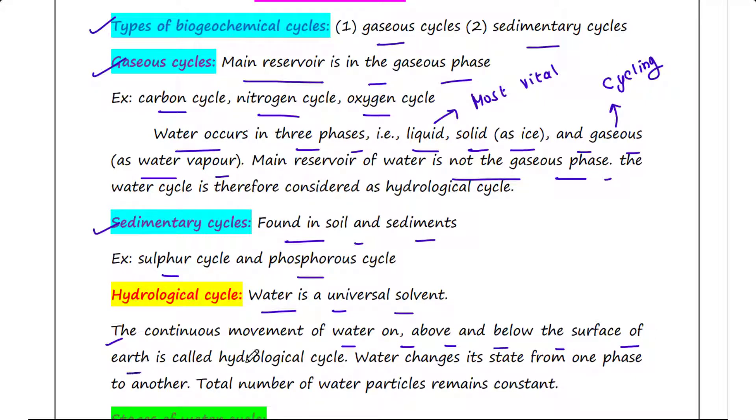The continuous movement of water on, above, and below the surface of the earth is called hydrological cycle. During this process, water changes its state from one phase to another. However, the total number of water particles remains constant.